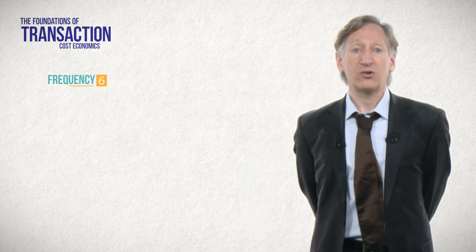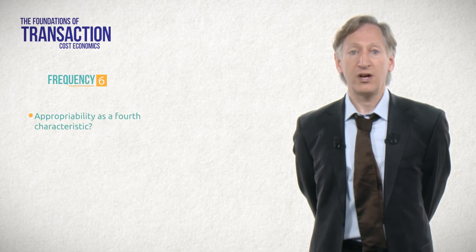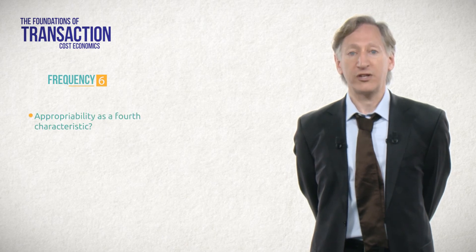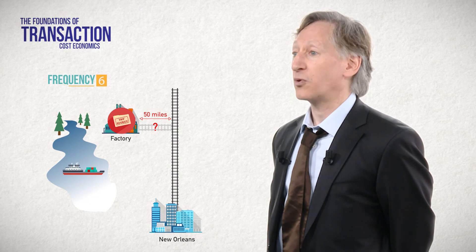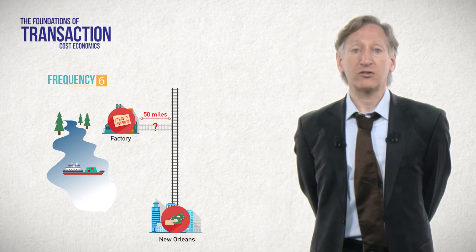In recent years, transaction cost scholars have embraced a fourth dimension of transactions that's particularly relevant to knowledge-based transactions. This is called appropriability. Imagine that in our transaction, I will have to share with you secret information about the construction of my furniture, maybe to help you transport it more effectively. Then I may be concerned that you'll take advantage of this knowledge, perhaps by sharing it with my competitors. In such a case, I might be reluctant to contract with you, as it's difficult to write a contract that will protect my knowledge from all the various ways that it might leak. How might we overcome these contractual hazards? The answer appears in the next video on the basic predictions of transaction cost economics.